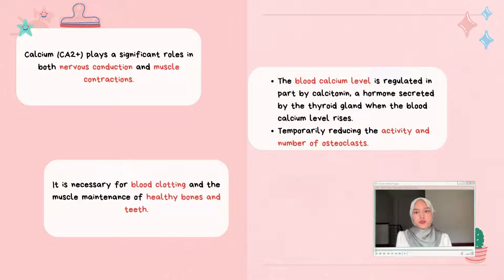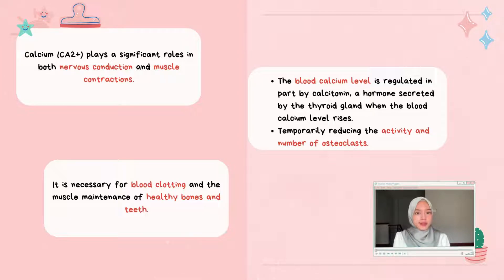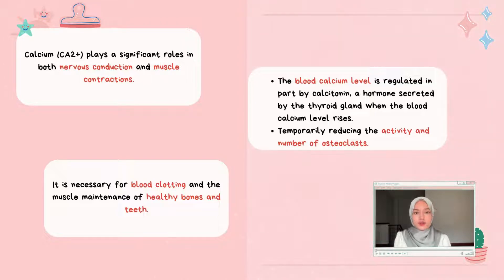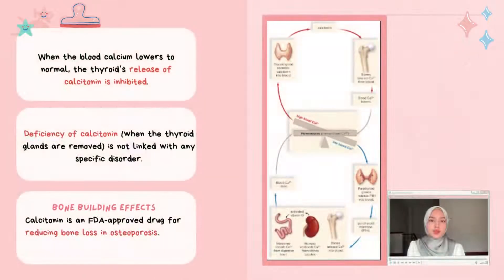Calcium plays a significant role in nervous conduction and muscle contraction. It is necessary for blood clotting and the maintenance of healthy bones. Blood calcium levels are regulated in part by calcitonin, a hormone secreted by the thyroid gland when blood calcium rises. Calcitonin reduces the activity and number of osteoclasts, and when blood calcium lowers to normal, calcitonin secretion is inhibited.